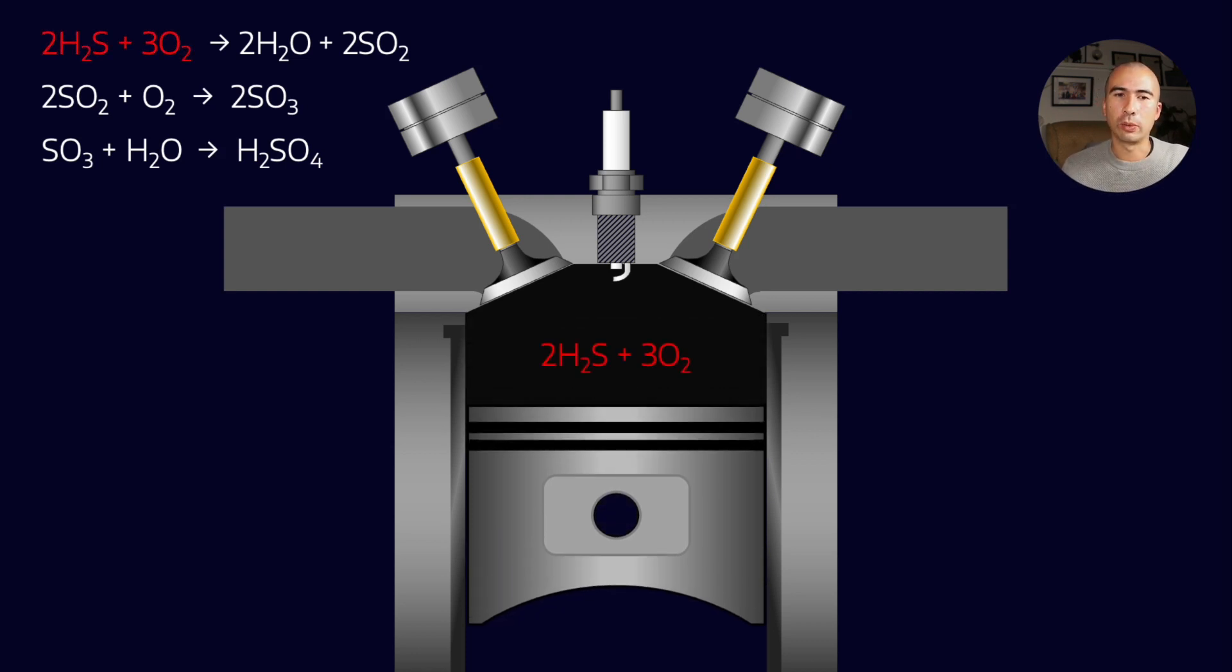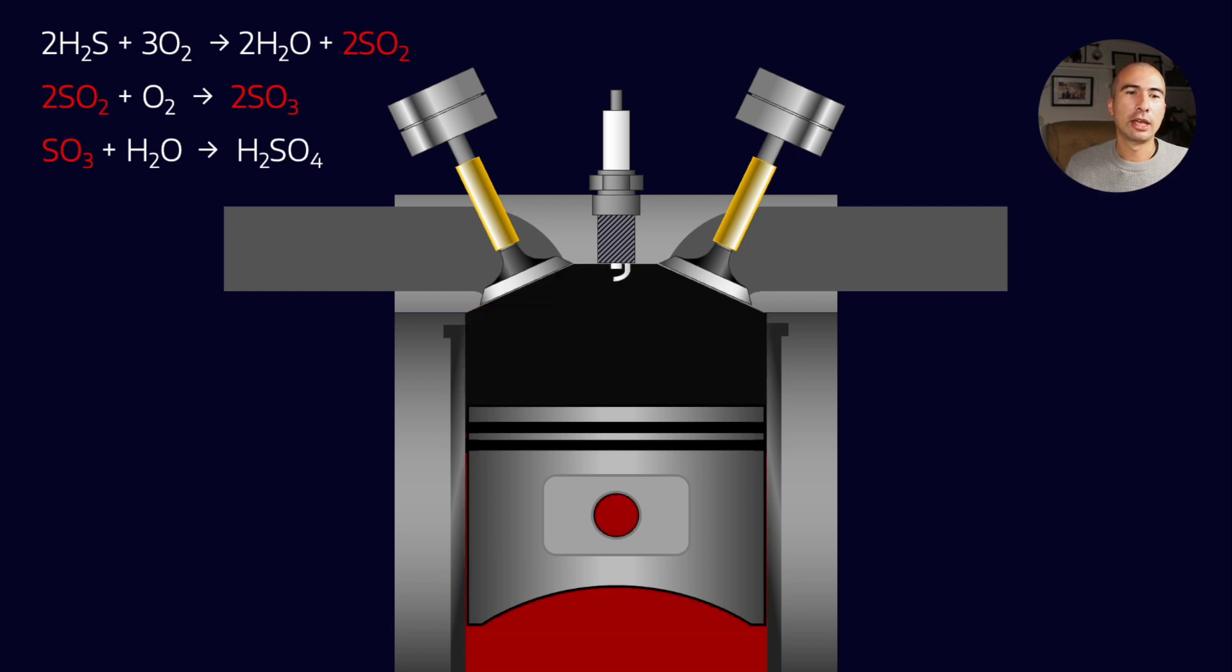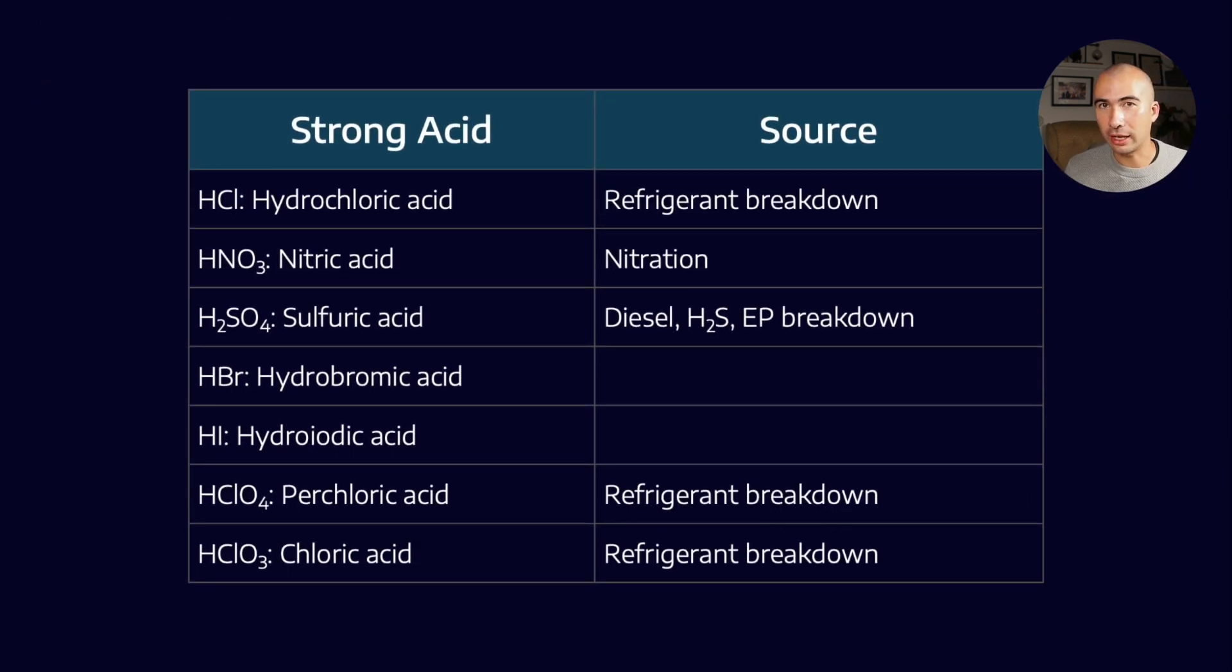So effectively what happens is we get H2S combusting with oxygen. It is going to produce sulfur dioxide and sulfur trioxide, which then is going to combine with water in the crankcase to form sulfuric acid.